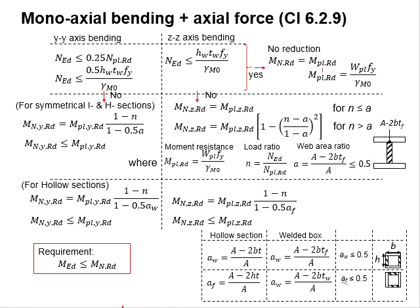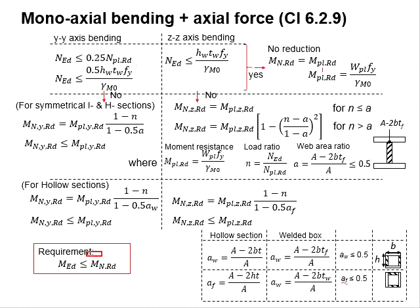Ultimately, the reduced moment resistance should be greater than the moment load acting on the member.